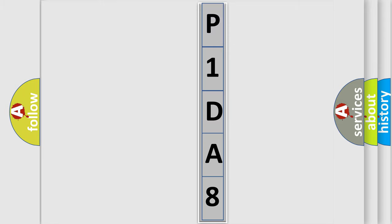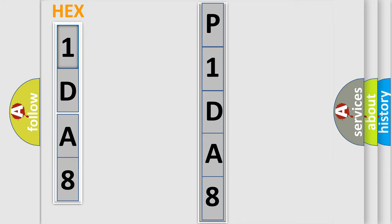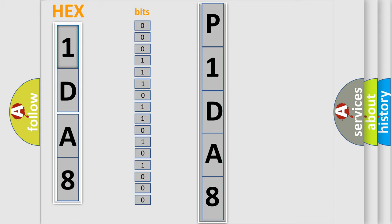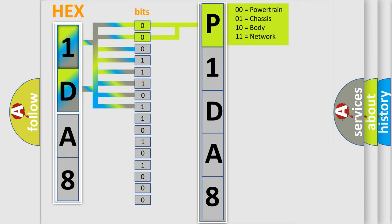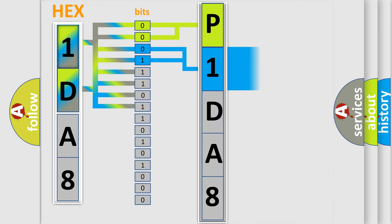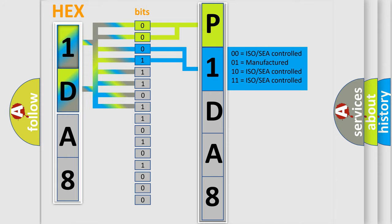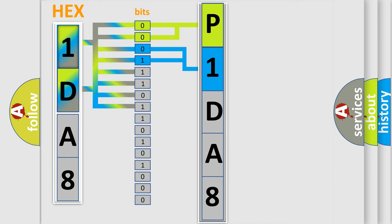The error code is split into two bytes consisting of 16 bits. One bit is the basic unit that each computer works with. The bit has two logical states: zero, meaning low level, and one, meaning high level. By combining the first two bits, the basic character of the error code is expressed. The next two bits again determine the second character. The last bits of the first byte define the third character of the code.